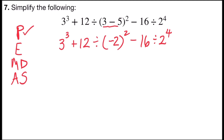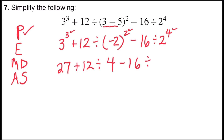Since that step is done, I can move on to my second step, which is to work exponents. So I have an exponent 3 cubed, negative 2 squared, and 2 to the 4th. So 3 cubed is 27, plus 12 divided by negative 2 squared — that means negative 2 times negative 2, which is positive 4 — minus 16 divided by 2 to the 4th power. 2 times 2 times 2 times 2 is 16.